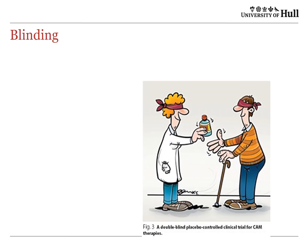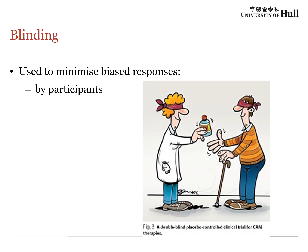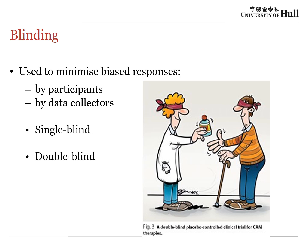Finally, blinding is also used to minimise bias — specifically bias in responses by participants and by data collectors. You try to minimise the likelihood that the person taking part knows which arm of the study they're in, or that the data collector knows this. It can be single-blinded, where one party doesn't know, or ideally double-blinded, where both parties don't know. In social research, especially using talk therapies, this can be quite hard to achieve.